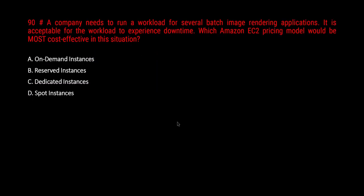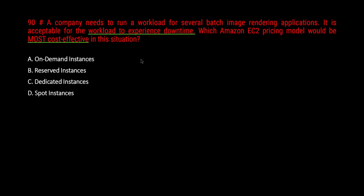Question 90: A company needs to run batch image rendering applications. It is acceptable for the workload to experience downtime. Which Amazon EC2 pricing model would be most cost effective? The keyword tip here: whenever an application can have downtime, intermittent failures, or is stateless, go for spot instances. They are the cheapest option, but you can only pick them when the question signals the application can tolerate interruption.